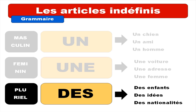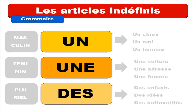And the last example: 'des nationalités'. So just remember that les articles indéfinis are: masculin — 'un', féminin — 'une', pluriel — 'des'. Let's hope everything is clear now.